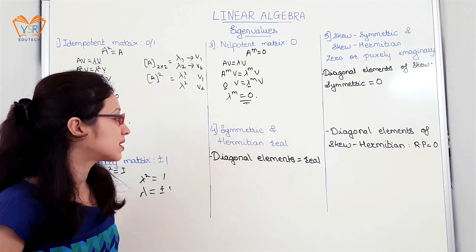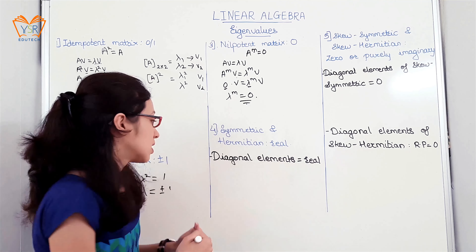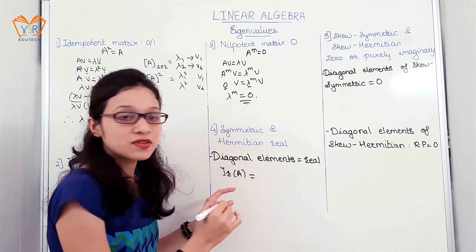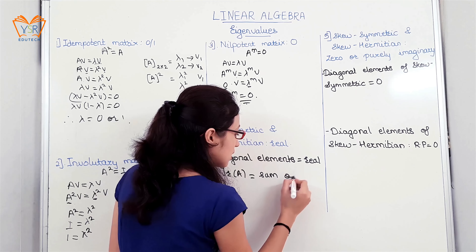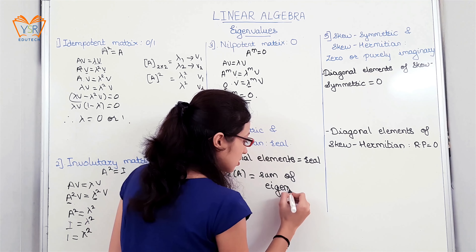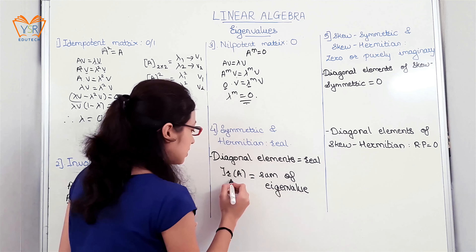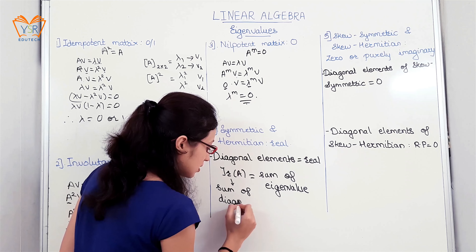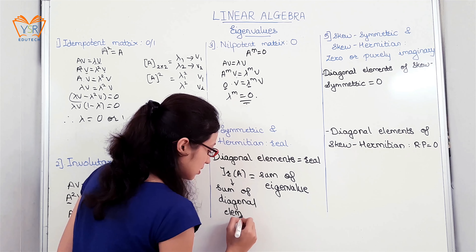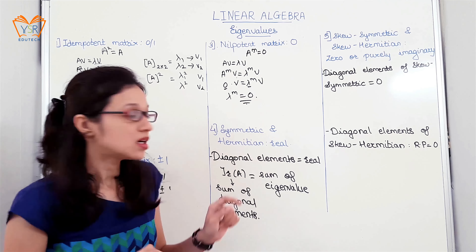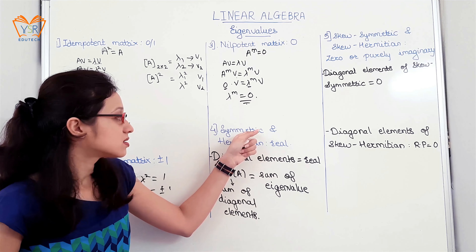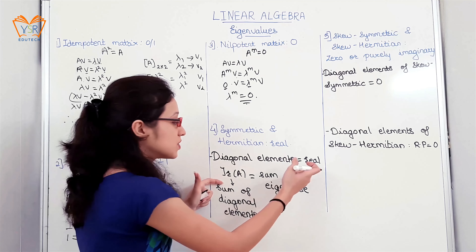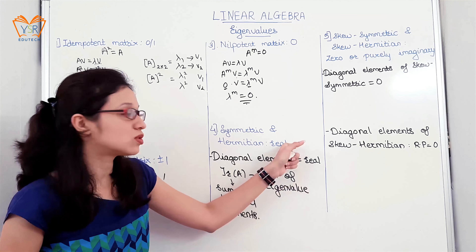The next: symmetric and Hermitian matrices — eigenvalues are real. In one of the properties we had stated that the trace of A equals the sum of the eigenvalues, and the trace equals the sum of the diagonal elements. The diagonal elements for symmetric and Hermitian matrices are always real, so the sum of eigenvalues is real.